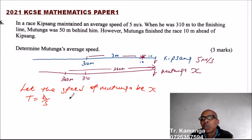So what we do is, the distance covered by Kipsang, the time taken by Kipsang to cover 300 meters is 300 divided by 5.